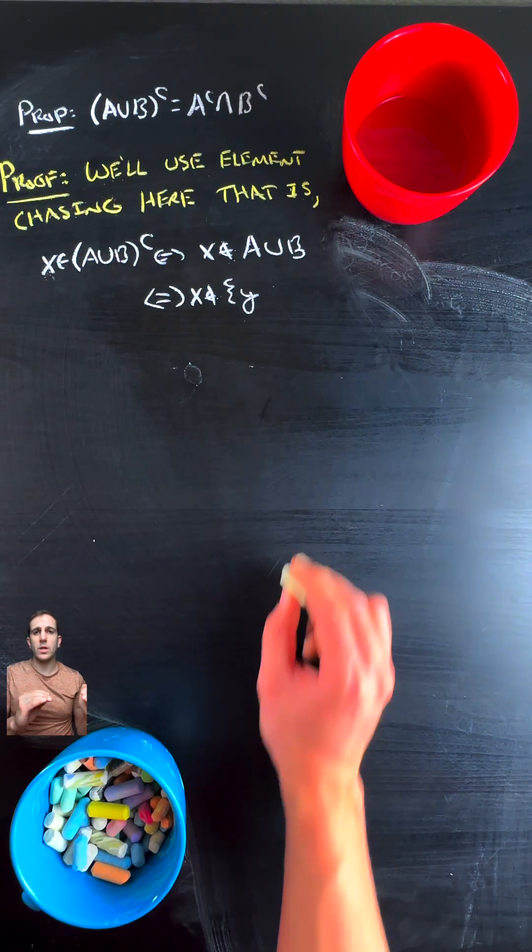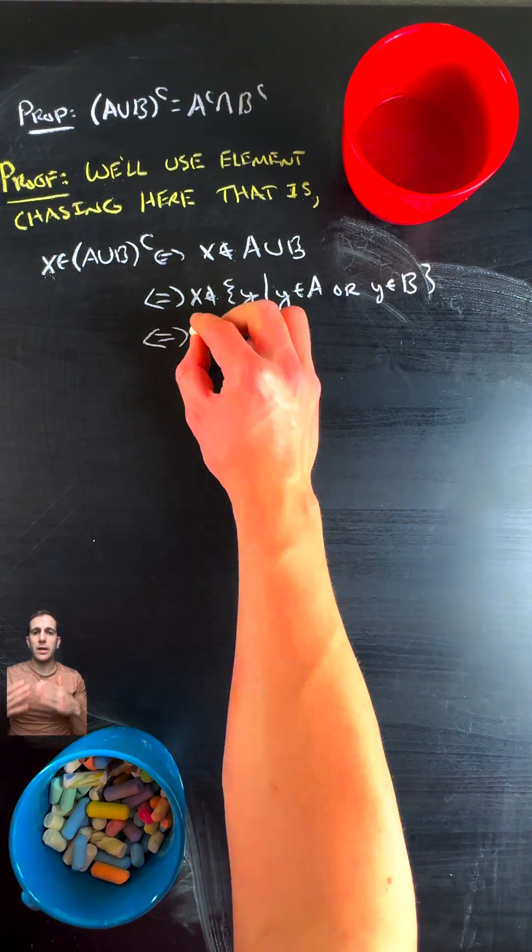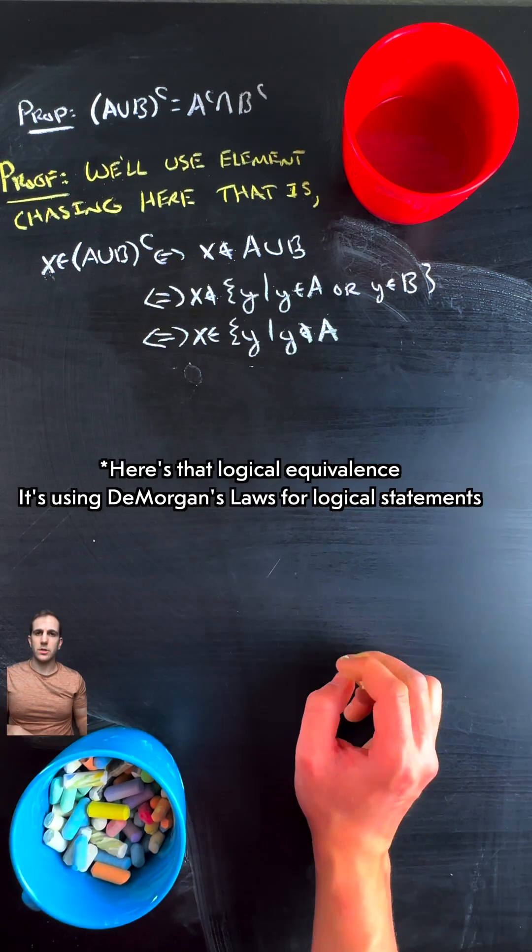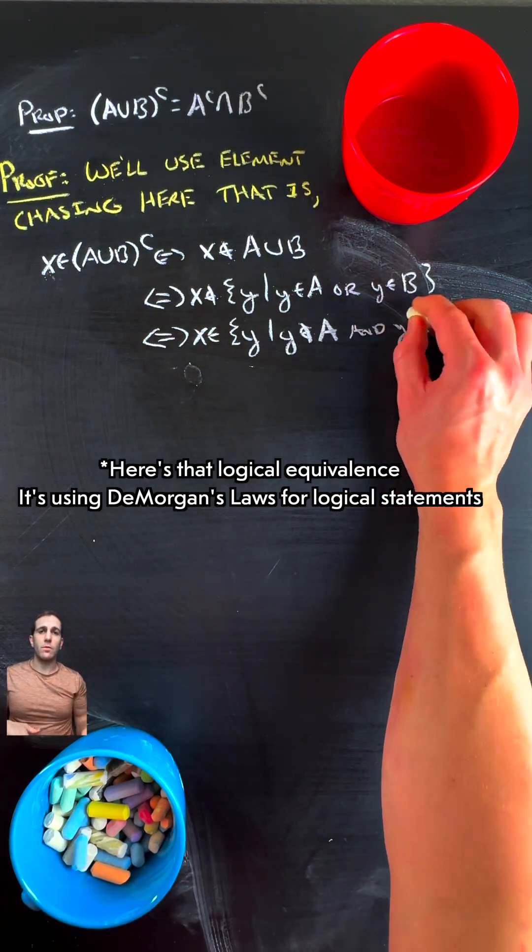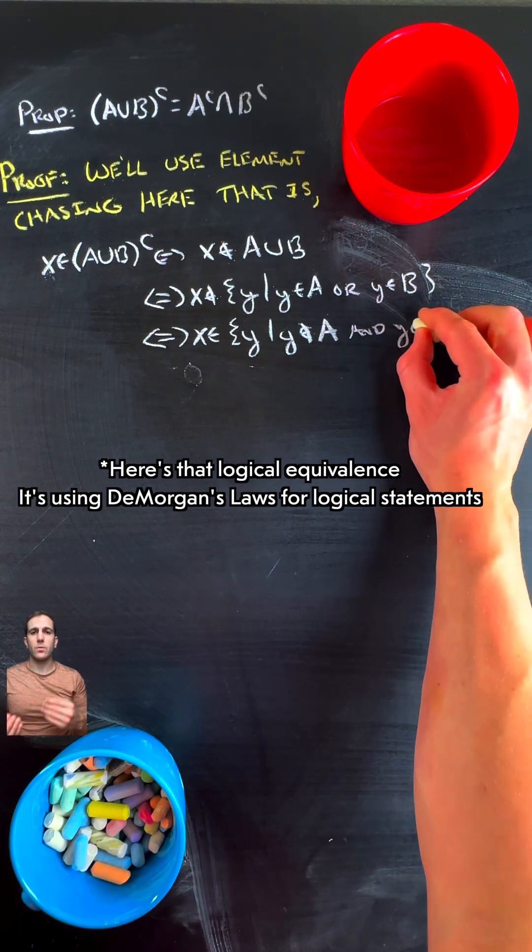By definition of union, we can break that up into logical terms, and then we can pull that not into the logical terms to get X is within the set of all Ys such that Y is not within A and Y is not within B.